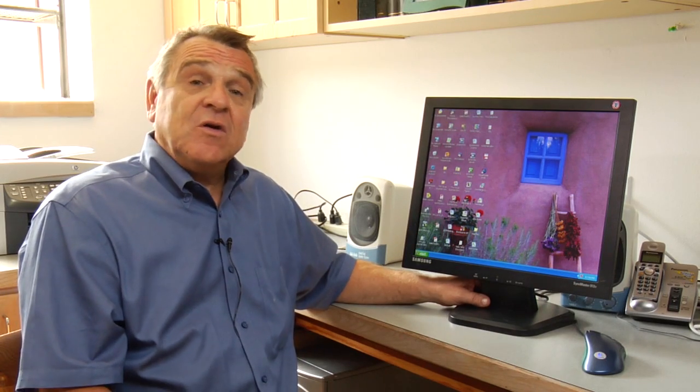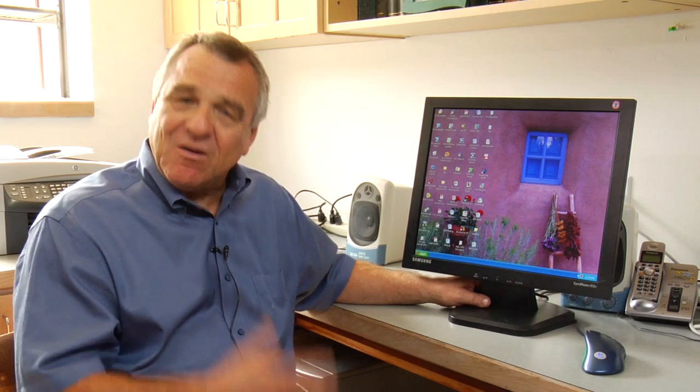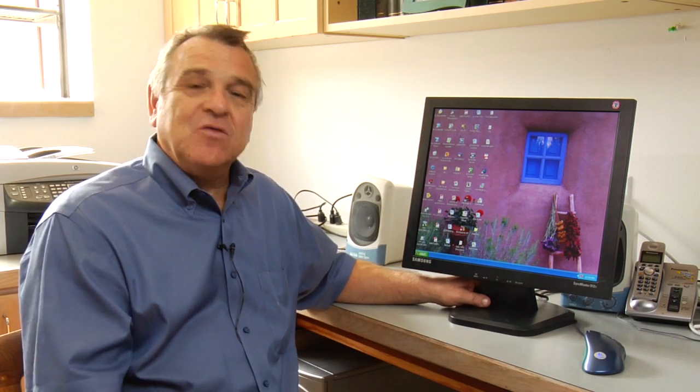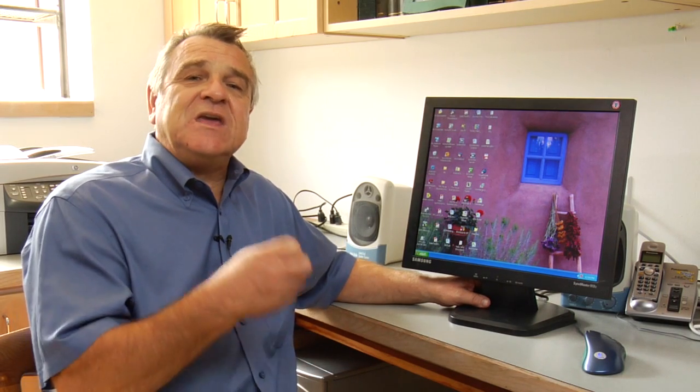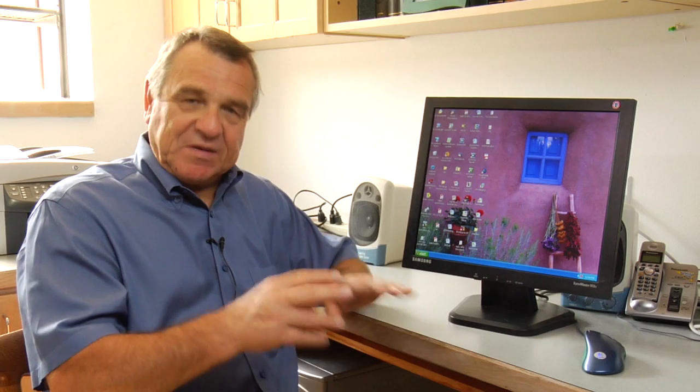For example, if you wanted to do a word processing document, you would need to open a word processing program. And how would you do that? There are two ways you can do it. One way is if you had a keyboard and knew what keyboard strokes, what buttons to push, you could open the program that way.